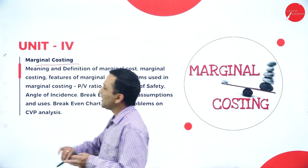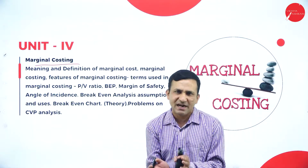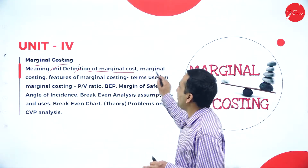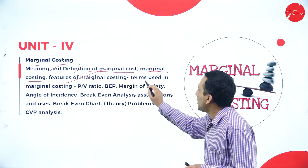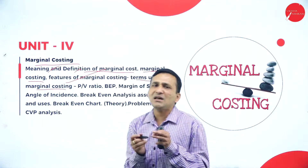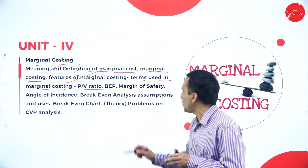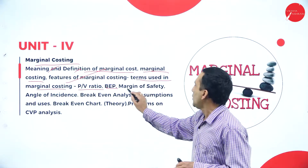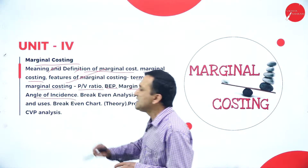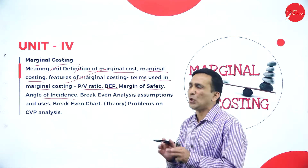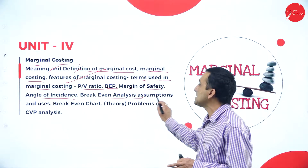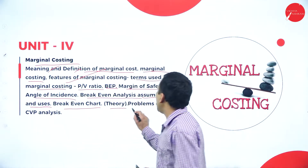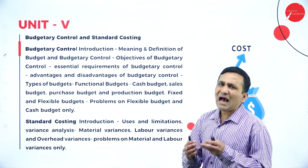Moving to the fourth unit, marginal costing covers the meaning and definition of marginal costing, its features, and terms used — including major ratios like the P/V ratio (profit volume ratio), break-even point, margin of safety, angle of incidence, break-even analysis assumptions, break-even chart theory, and problems on CVP analysis.